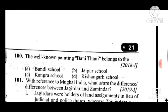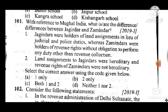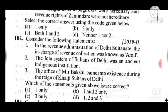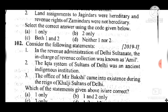Question 101: With reference to Mughal India, what is or are the difference(s) between Jagirdars and Zamindars? Answer is D — neither one nor two statements are correct. Question 102: Consider the following statements — answer is A, only statement one is correct; two and three are incorrect.